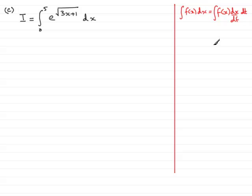And it's that idea that I'm going to use. My f of x is e to the power root of 3x plus 1. And the substitution that we're given is t equals 3x plus 1 all to the power half, the square root in other words of 3x plus 1.